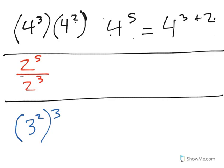So as you can see, 3 plus 2 is equal to 4 to the fifth. And when we go ahead and solve that, we get an answer of 1,024.